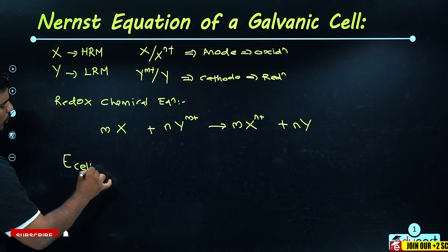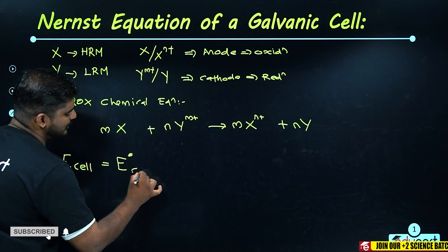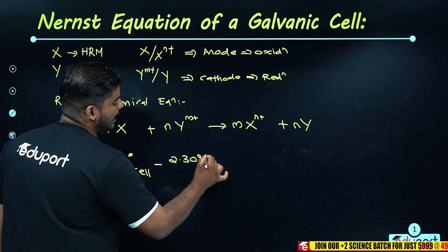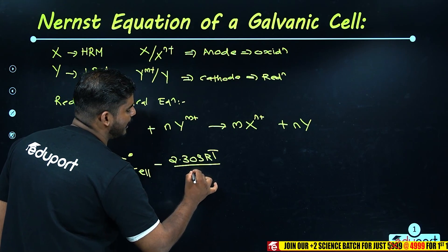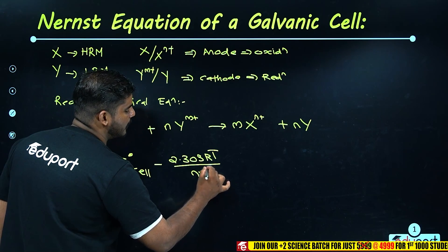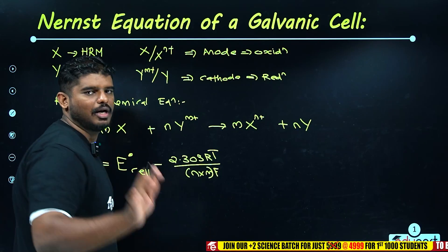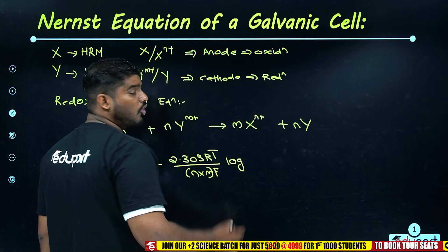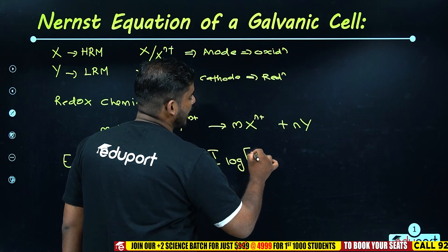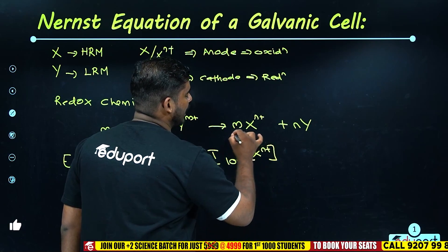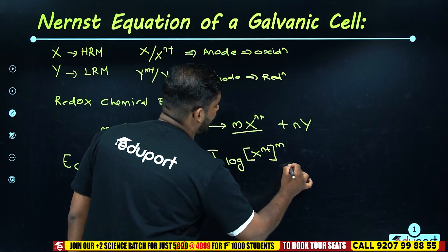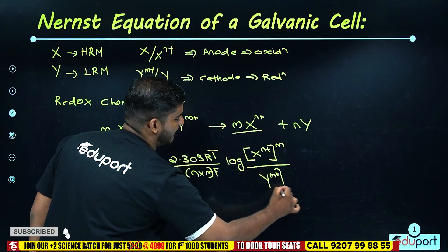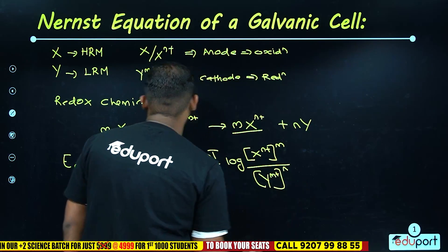The Nernst equation structure is: E_cell equals E°_cell minus 2.303RT divided by n into m, into F, into log of concentration of X-n-plus raised to m, divided by concentration of Y-m-plus raised to n.